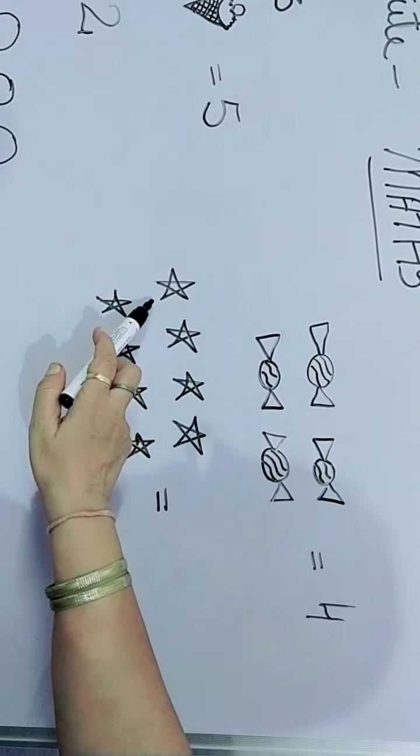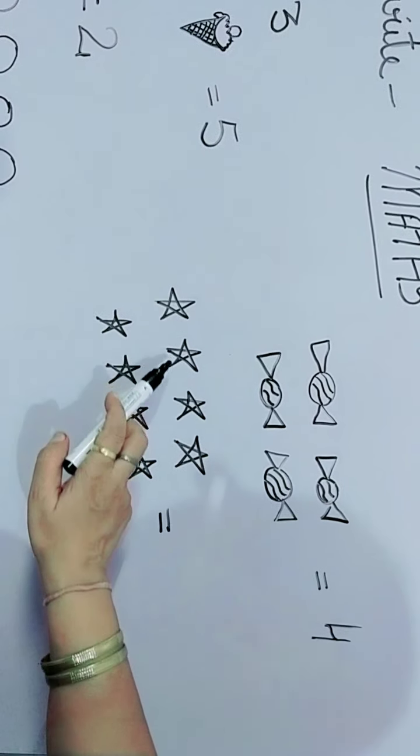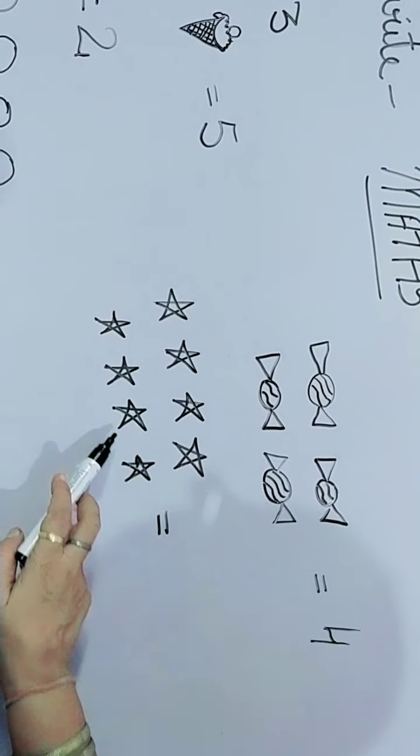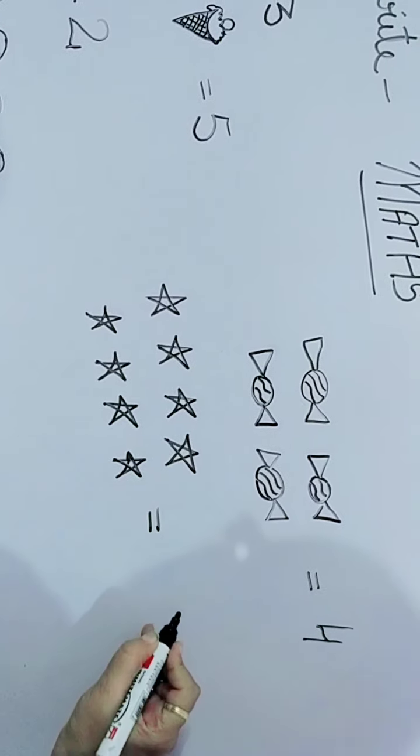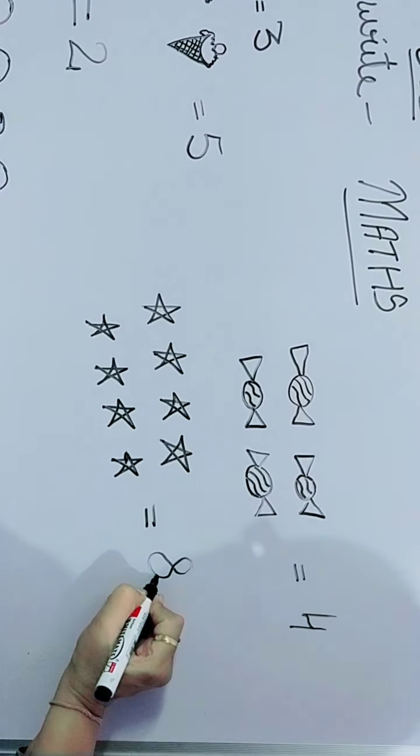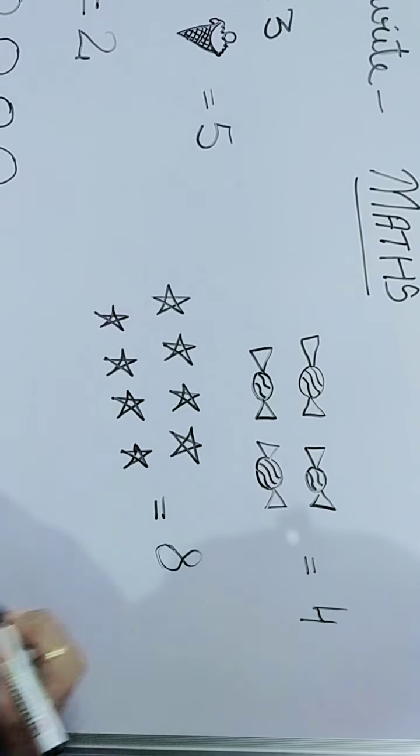Then there are stars. Count the stars. 1, 2, 3, 4, 5, 6, 7, 8. How many stars? 8 stars.